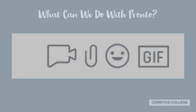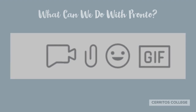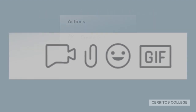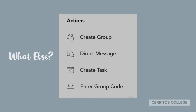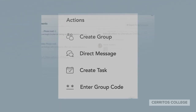What types of things can we do with Pronto? We can live stream, attach files, even include emojis and GIFs. We can also create groups, direct message anyone, and create tasks.